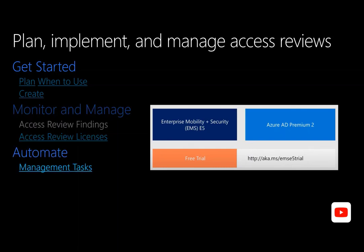Organizations can automate lifecycle processes through technologies such as dynamic groups, coupled with user provisioning to SaaS apps or apps integrated with Azure Active Directory. You can set up recurring access reviews at set frequencies such as weekly, monthly, quarterly, or annually, and reviewers will be notified at the start of each review. Reviewers can approve or deny access with a friendly interface and with the help of smart recommendations.